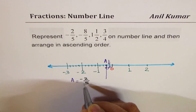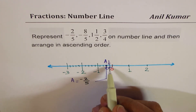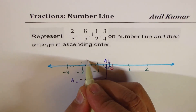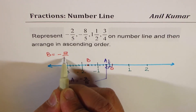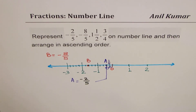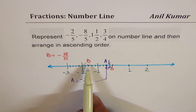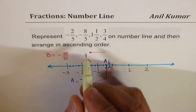Now what is -8/5? -8/5 means we go 1, 2, 3, 4, 5, 6, 7, 8 — so this is position B, which equals -8/5. Out of A and B, which one is the smaller number? B is smaller — numbers on the left are smaller, as they are decreasing.